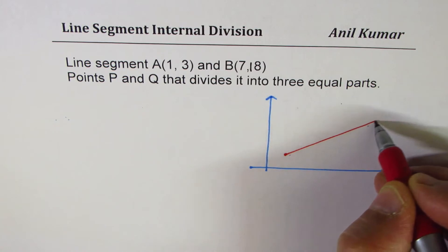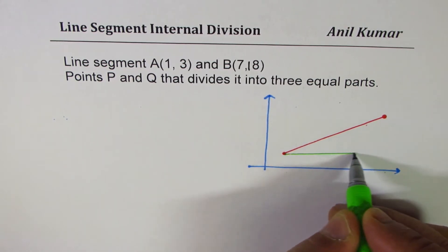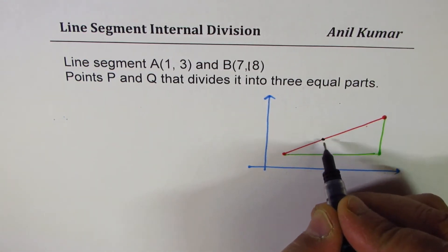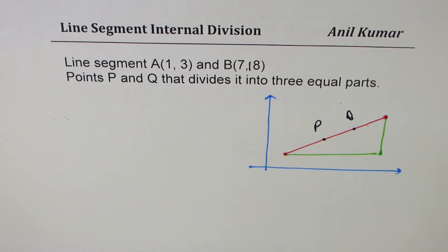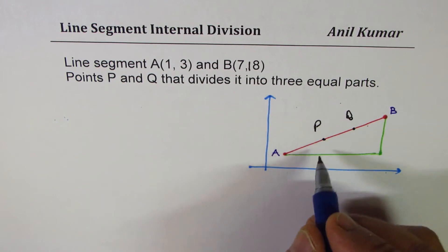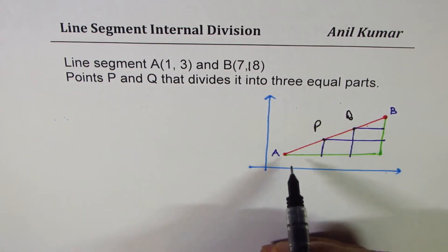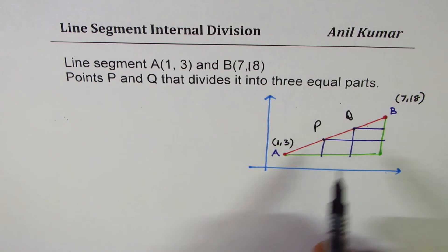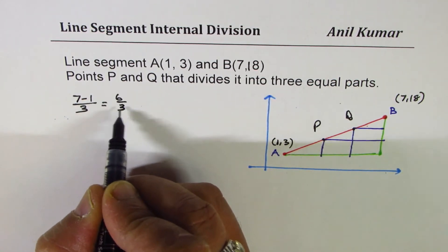We will follow the same thing which we did last time. This time, the triangle is kind of here. We want to divide again using two points, P and Q, into three equal parts. That really means that we have to divide this distance between A and B in three portions. Now, A is 1, 3 and B is 7, 18. Each unit is how much? 7 minus 1 divided by 3 is 6 over 3 which is 2.